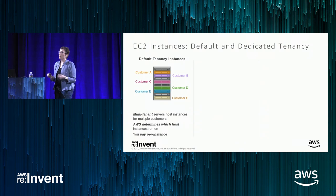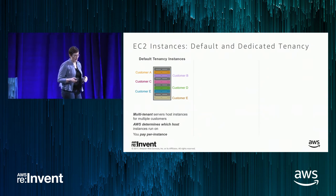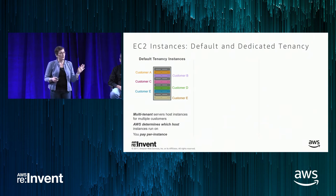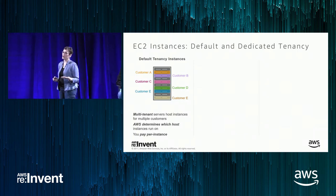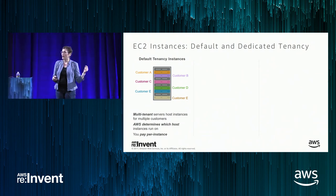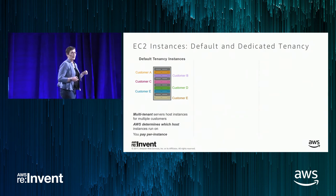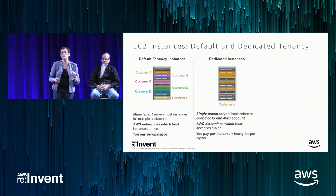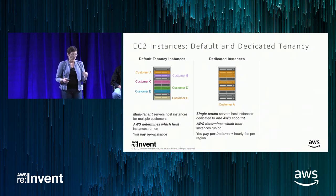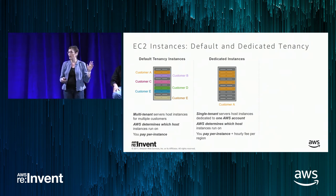Before I dive into how to do the licensing, I want to do a quick review of the different tenancies. Default tenancy is what most of you using EC2 are already familiar with — multiple customers on one server, multi-tenant infrastructure. AWS decides which host to place your instance on within the availability zone you choose. We also offer dedicated instances, which means we guarantee you're the only AWS account on that host. With a dedicated instance, AWS controls the host placement as long as it's a host used only by your account.